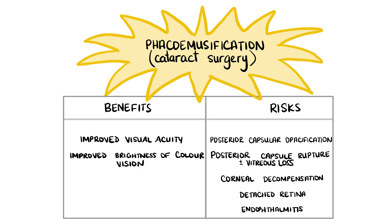You should discuss the risks and benefits of cataract surgery with patients you are going to refer. Benefits include improved visual acuity, improved clarity of vision, and improved colour vision. Risks occur in about 2% of cases and include posterior capsular opacification, where remaining epithelial cells of the lens proliferate and cause the lens to become opaque again; posterior capsule rupture and/or vitreous loss, which is the most common intraoperative complication; corneal decompensation, where lens fragments are retained in the anterior chamber leading to swelling of the cornea; retinal detachment, which can occur up to months after the operation; and endophthalmitis, which refers to inflammation of the aqueous and/or vitreous humour and can lead to visual loss.